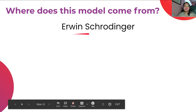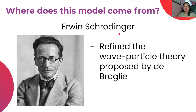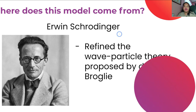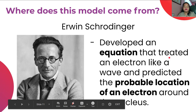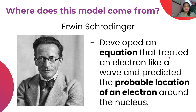Next is Erwin Schrödinger, who refined the wave-particle theory proposed by De Broglie. He made the explanation more detailed, and after studying it, he developed an equation that treated an electron like a wave and predicted the probable location of the electron around the nucleus. In this topic, we will not use his equation — we will just focus on the developed atomic model, which is the quantum mechanical model.